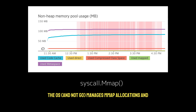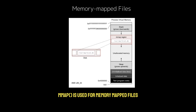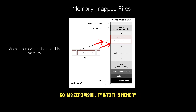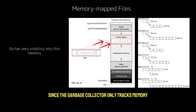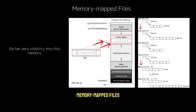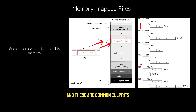The OS, not Go, manages mmap allocations. mmap is used for memory-mapped files or large binary buffers — it lets you load large files into memory as if they were part of your program's memory space. Go has zero visibility into this memory because it didn't allocate it. Since the GC only tracks memory created using Go's make or new commands, any memory mapped via mmap is essentially invisible to the garbage collector. Libraries that do file I/O, memory-mapped files, and image processing often use mmap, and these are common culprits.